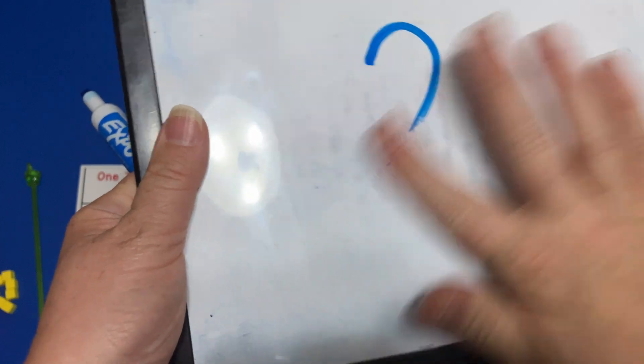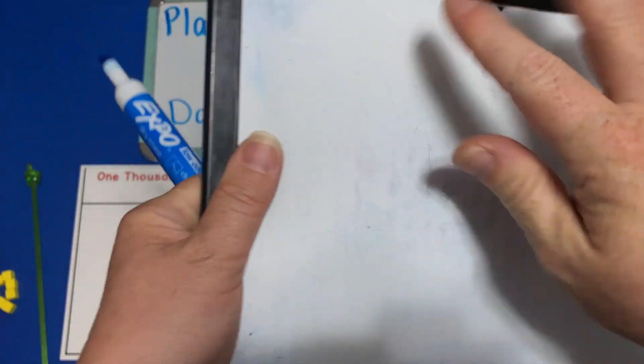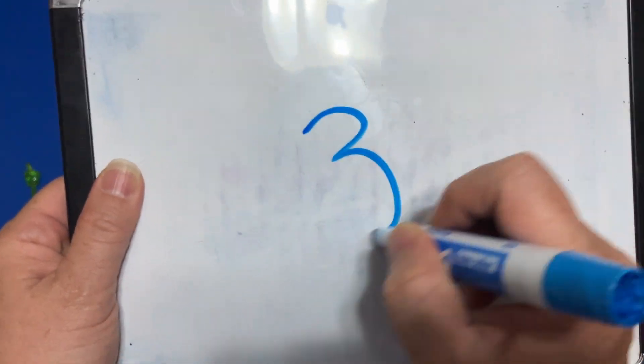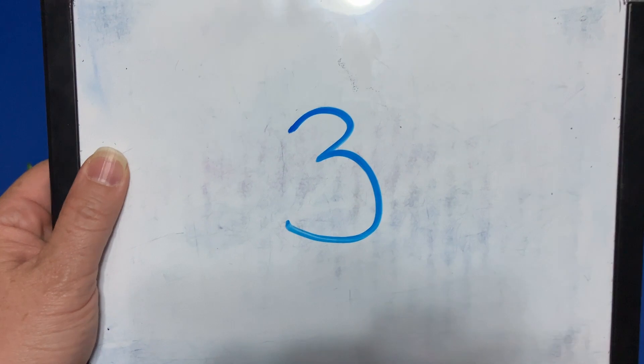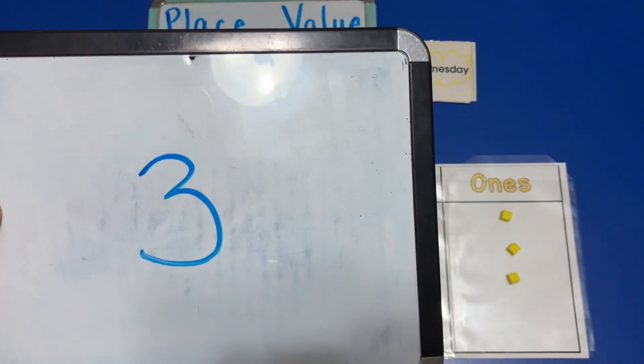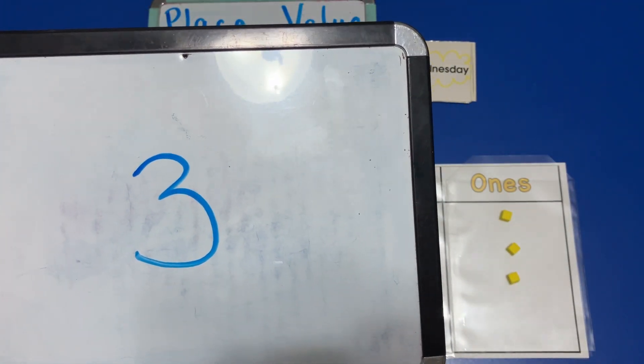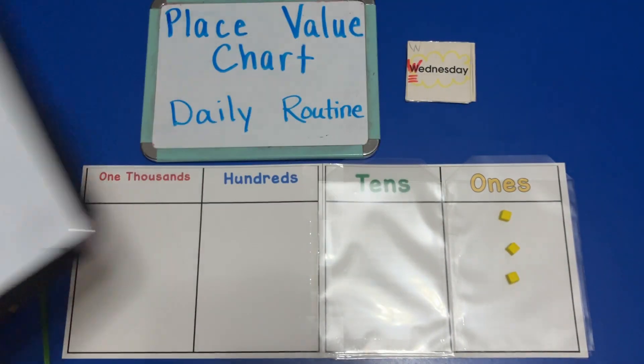And if we have three ones, what number is that? Three ones is three. So we would know that we have three on our place value chart.